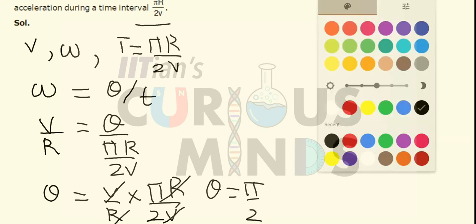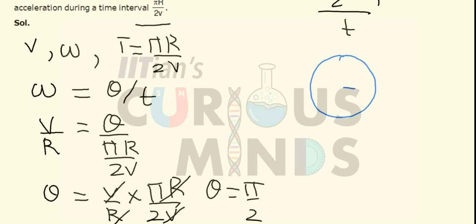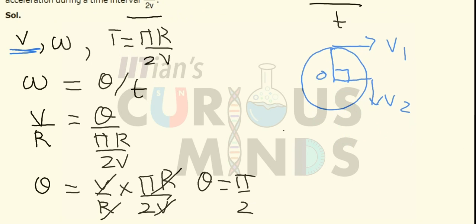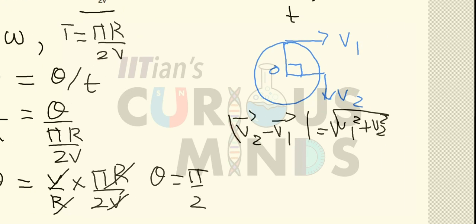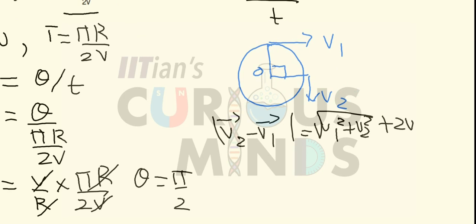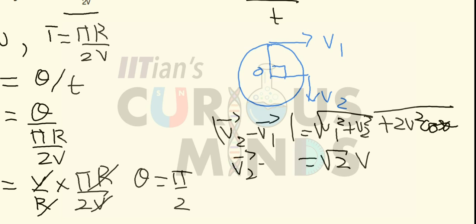Drawing the diagram for circular motion with center O: initially the particle has velocity v1, and at the end it has velocity v2. The magnitude of both is the same since speed is constant. The magnitude of (v2 minus v1) equals the square root of v1² plus v2² plus 2v1·v2·cos θ, which simplifies to √(2v²) since cos 90° equals zero, giving √2·v.